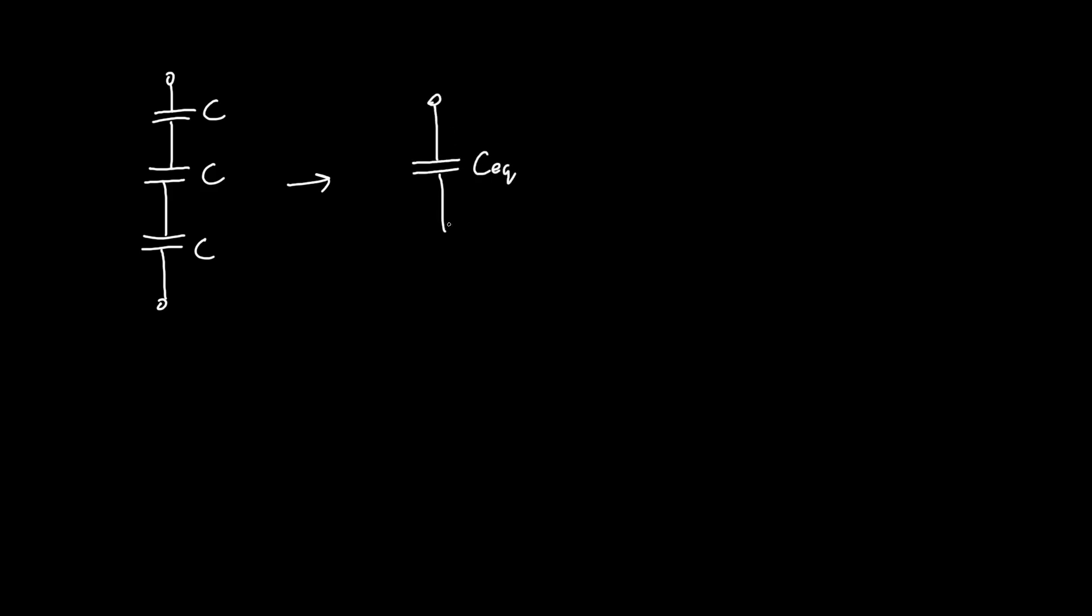Well, we can use the exact same formula that we used before, that one over the equivalent capacitance is just one over C1, plus one over C2, plus one over C3. This formula works for any number of capacitors in series. Now, because we have three in series, and they all have the same capacitance, it's one over C, plus one over C, plus one over C, or three over C.